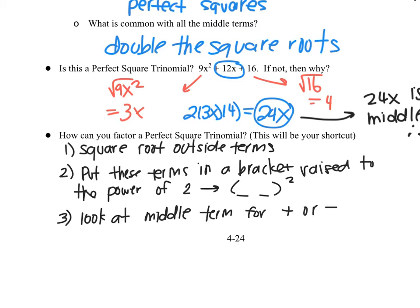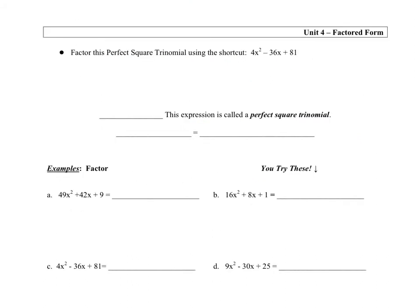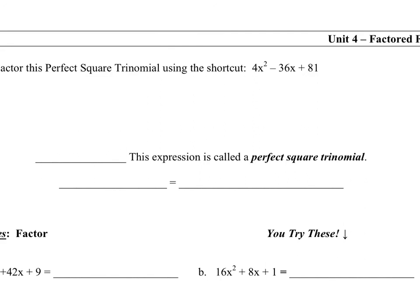Let's factor the perfect square trinomial using that shortcut. I take the square root of the first outside term, giving 2x, and the square root of 81, giving 9. I put those in a bracket raised to the power of 2. The middle term is negative, so it's (2x − 9)². As a check: 2x times 9 is 18x, doubled is 36x — which matches the middle term. Perfect.